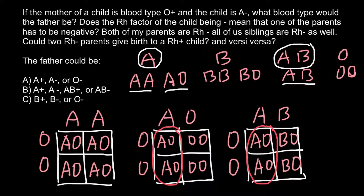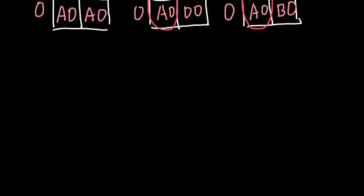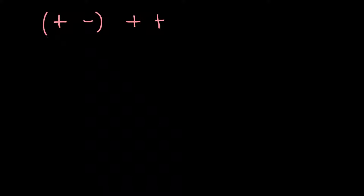Now let's consider the Rh factor. If the mother is O positive and the child is A negative, can the father also be positive — for example, A positive or AB positive — or does he have to be negative, like A negative or AB negative? This factor is under control of two alleles: one allele is positive and another is negative. These two alleles can produce three genotypes: positive/positive, positive/negative, and negative/negative.